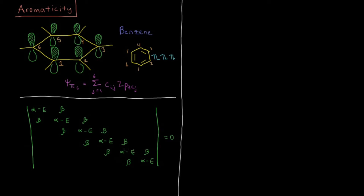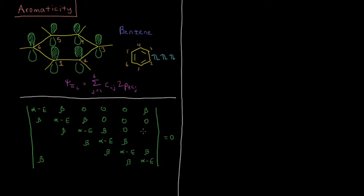There's one more surprise. This would be the complete secular determinant if this were, for example, 1,3,5-hexatriene, but the extra benefit we get from having a ring — giving this aromaticity — is that atoms six and one are also adjacent. So in an aromatic system we get an extra element in the corner: H16 and H61, an extra beta. All other non-adjacent carbon atom pairs are filled with zeros.